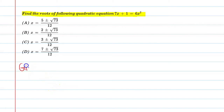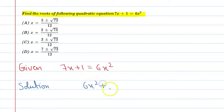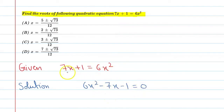The given equation is 7x plus 1 equal to 6x squared. You can write this equation in standard form: 6x squared minus 7x minus 1 equal to 0. Now all the terms are on the right side and we have written the equation.